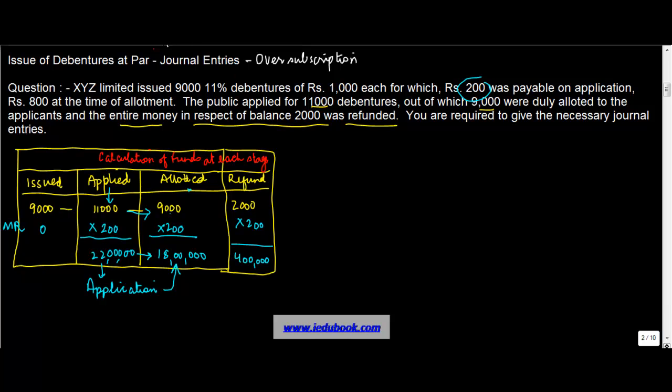Now let's pass the journal entries in respect of this. There was nothing at the time of issue. At the time of application, you received 22 lakh rupees. So you will pass the entry bank account, debit, you received 22 lakh or 2,200,000.